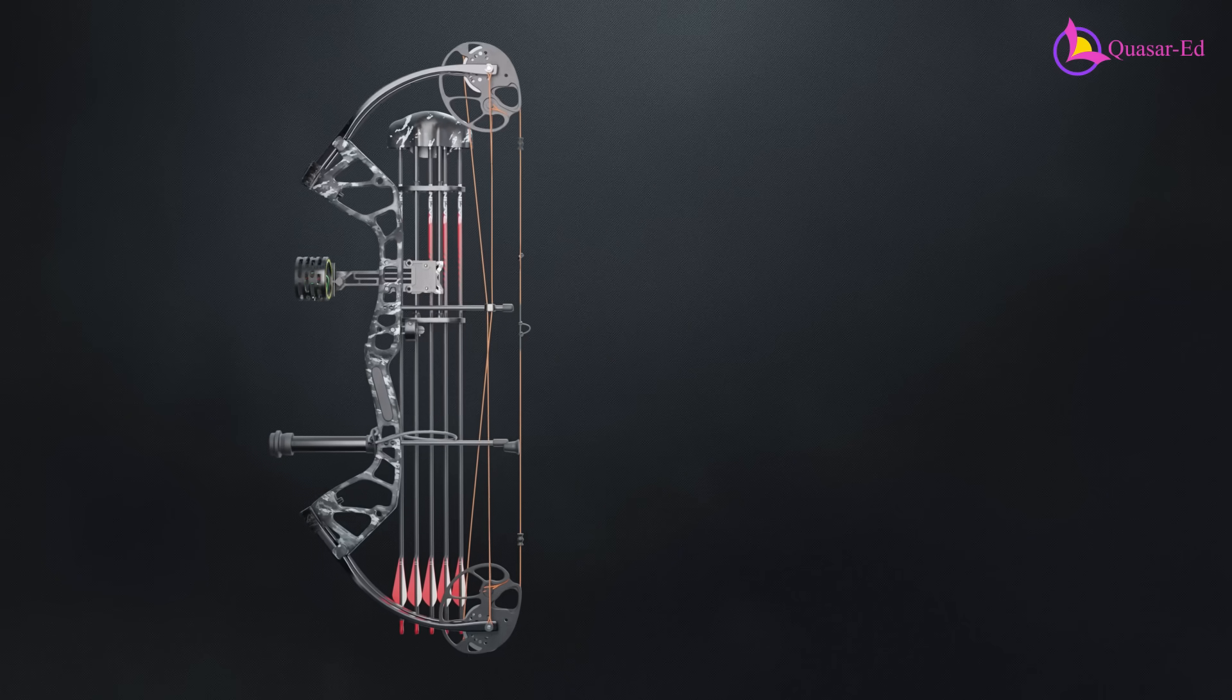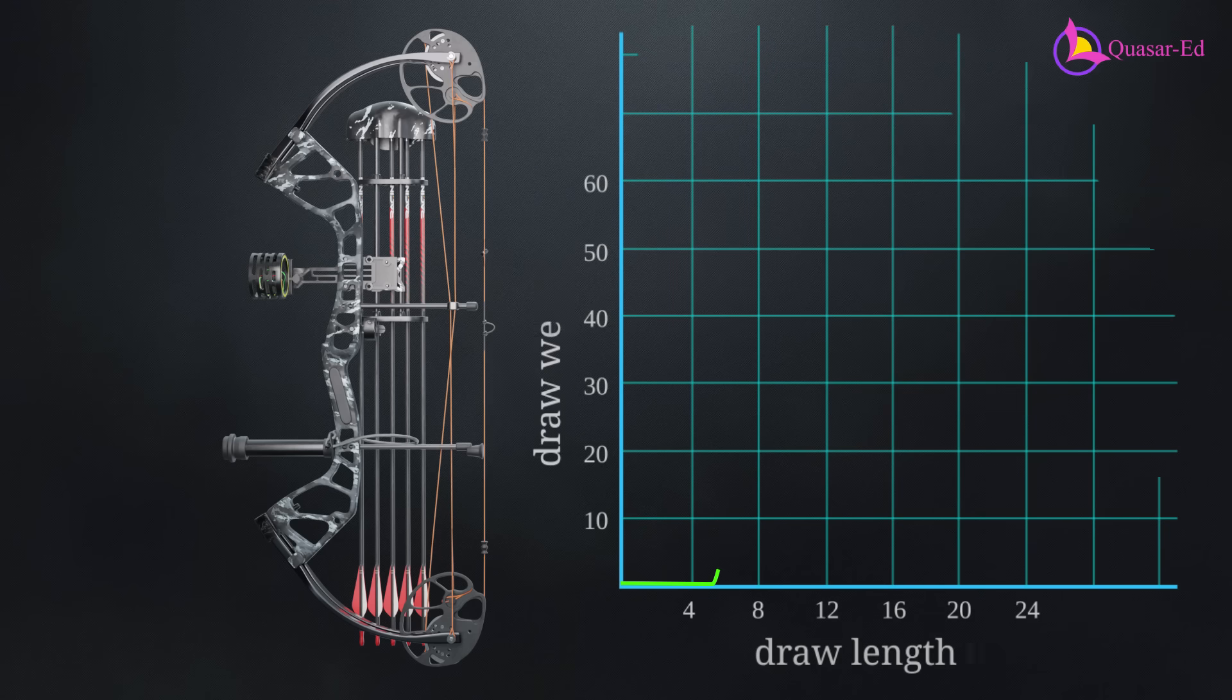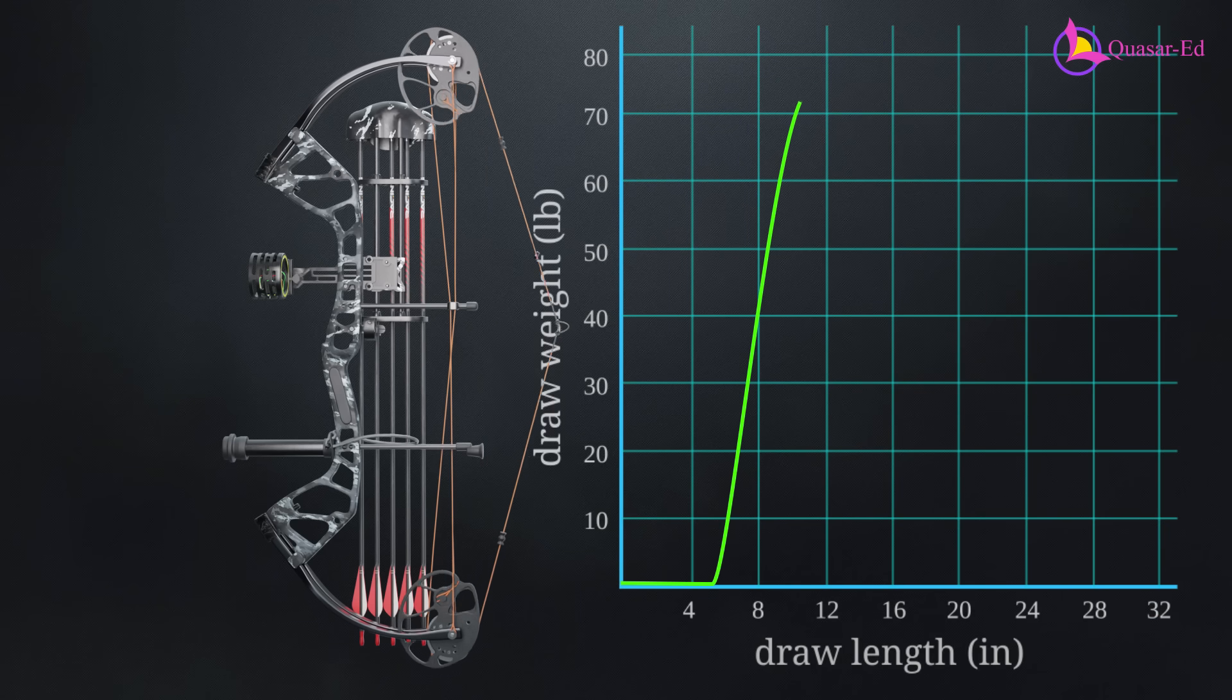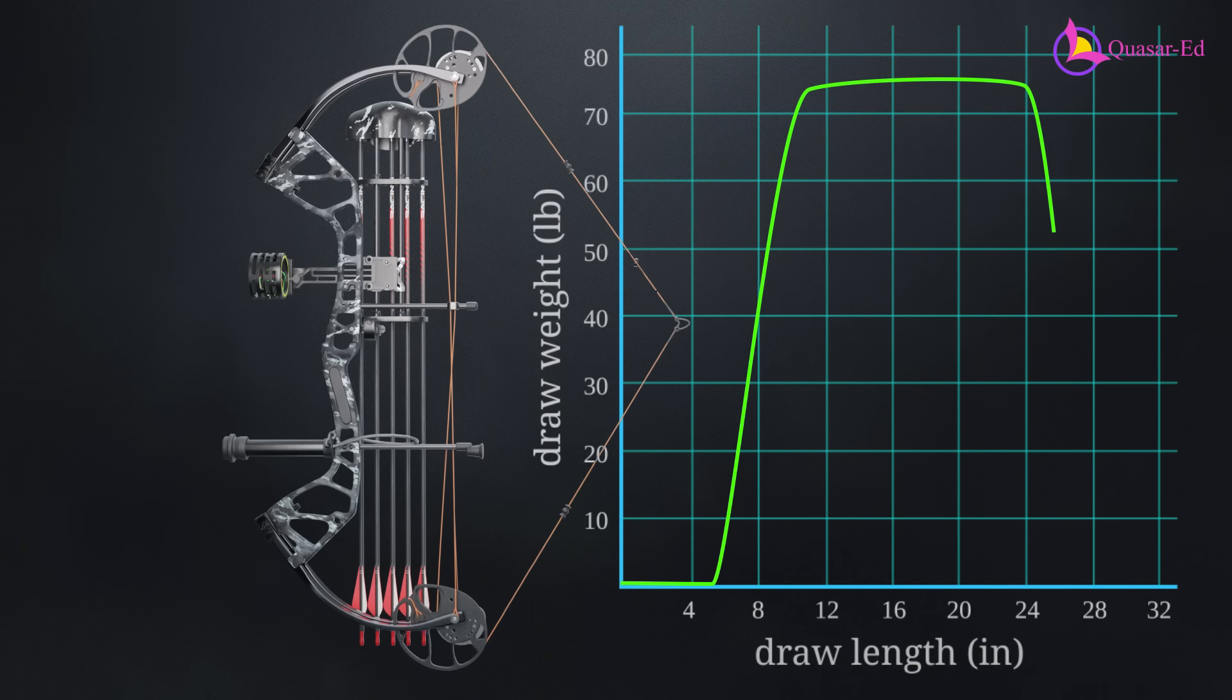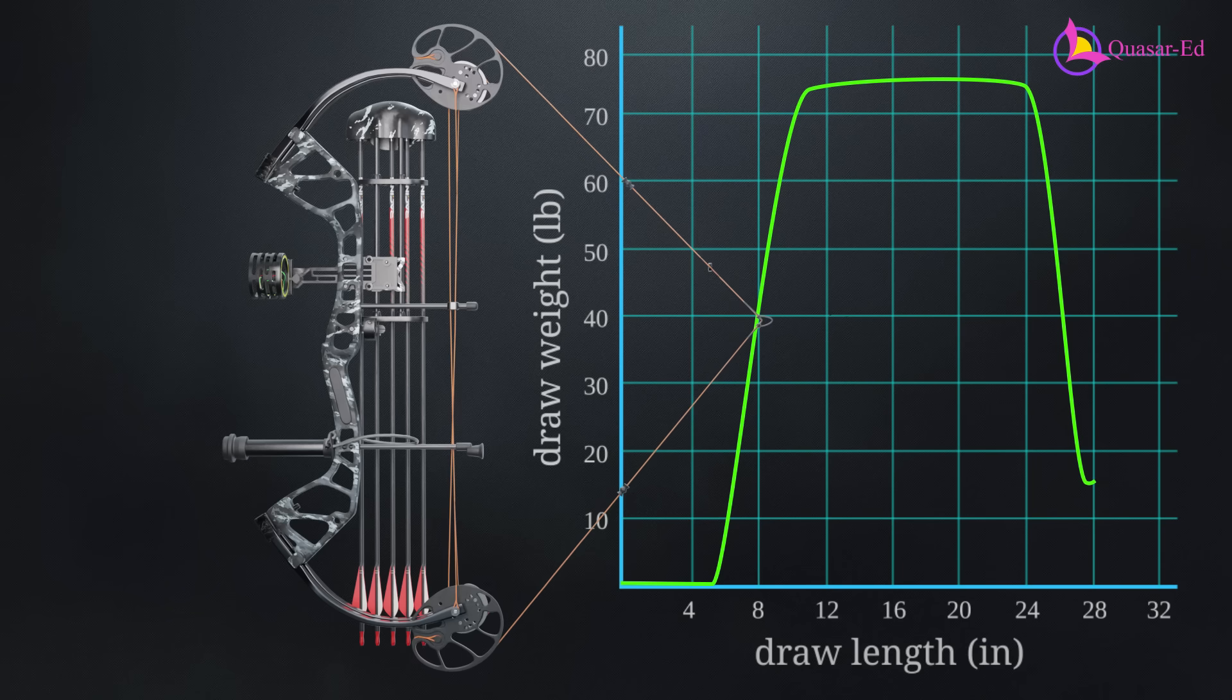A compound bow, on the other hand, works differently. The draw force gradually increases, peaks, and then drops significantly at full draw, thanks to its cam system.